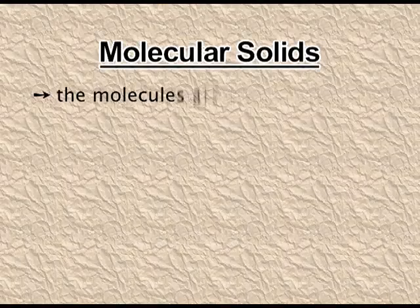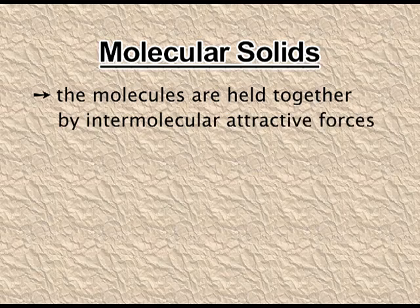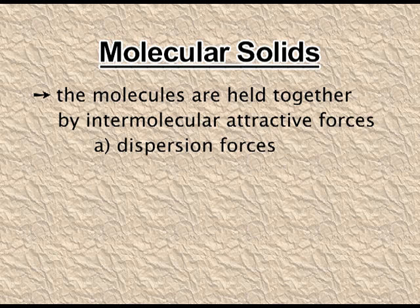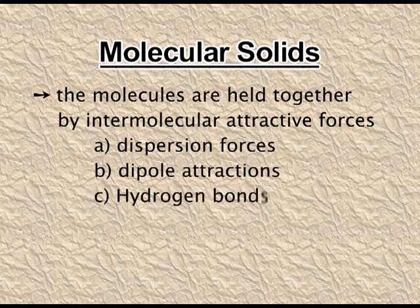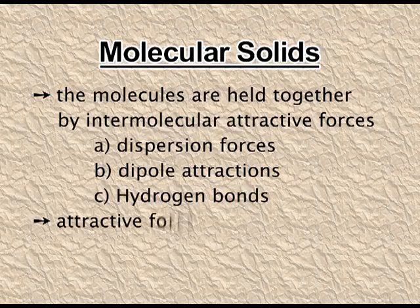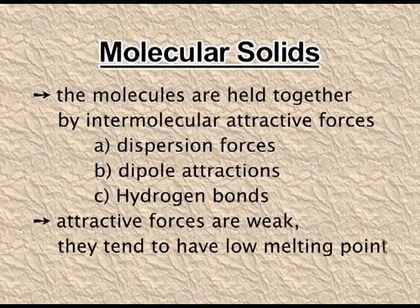In molecular solids, the constituent particles are molecules — for example, noble gases, iodine, etc. In molecular solids, three types of intermolecular attractions are found: dispersion forces, dipole attractions, and hydrogen bonds. All three types of interactions are very weak, and when intermolecular forces are weak, the solids are soft and their melting point is low.